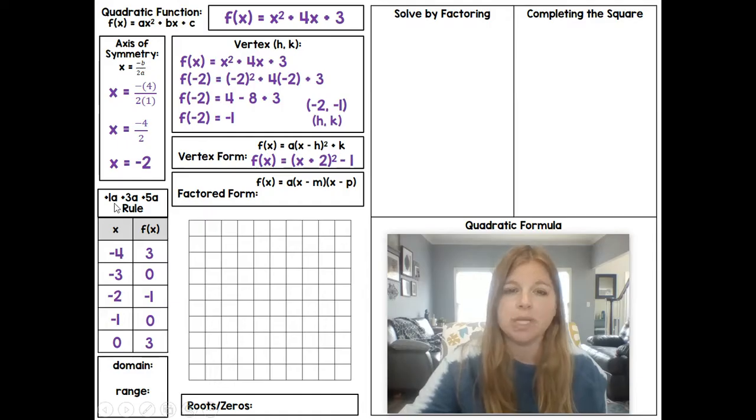Now, this +1a, +3a, +5a rule is just a quicker way instead of substituting in a -4 up here to get the y value and plugging in a -3, just like the way we plugged in a -2 to get the -1. I could technically do that with those numbers and make my table, but it's kind of easier to follow that rule. So now let's go ahead and graph it.